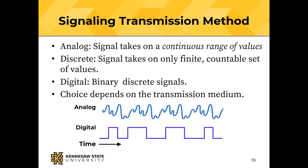The two waveforms do not represent the same thing. The digital waveform is on/off patterns, while the analog waveform is a note from a violin displayed on an oscilloscope.